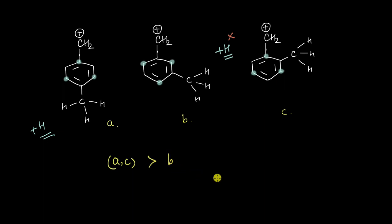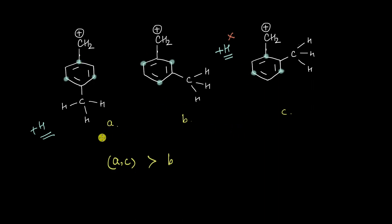Now how do we compare the stability between a and c? Purely based on hyperconjugation, both a and c are going to have exactly the same stability. Putting a methyl group at the para position or the ortho position brings about negative charges at identical positions — both bring lone pair of electrons right under the cation, and both can stabilize the cation via hyperconjugation. So considering only hyperconjugating effects, a and c will have exactly the same stability.